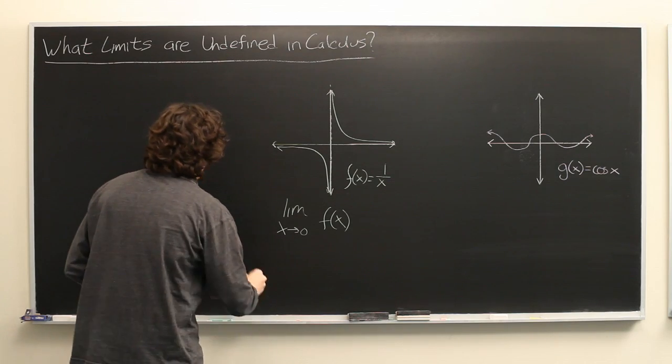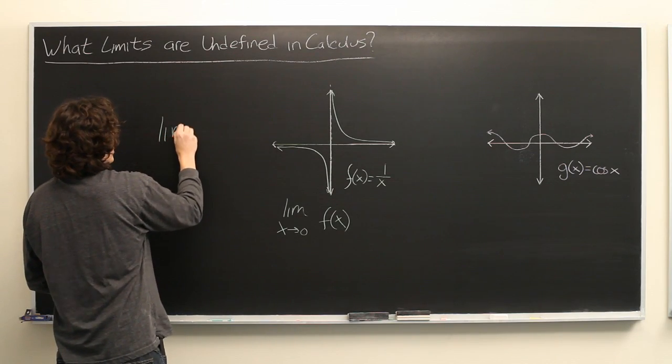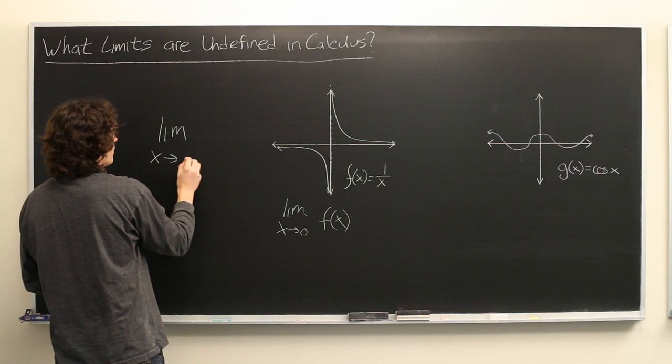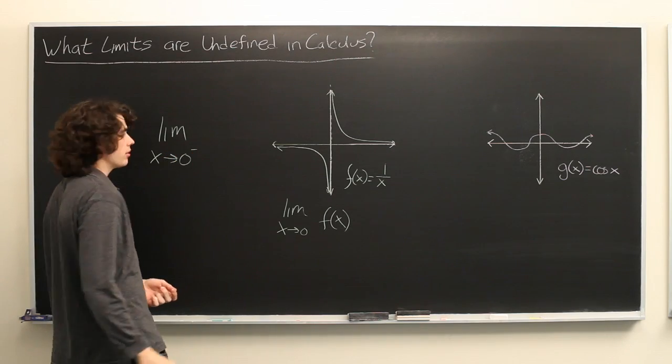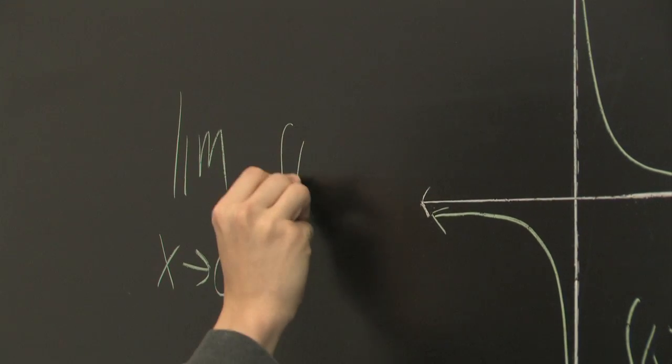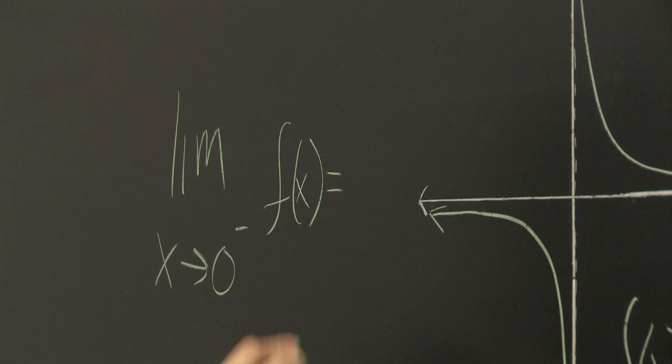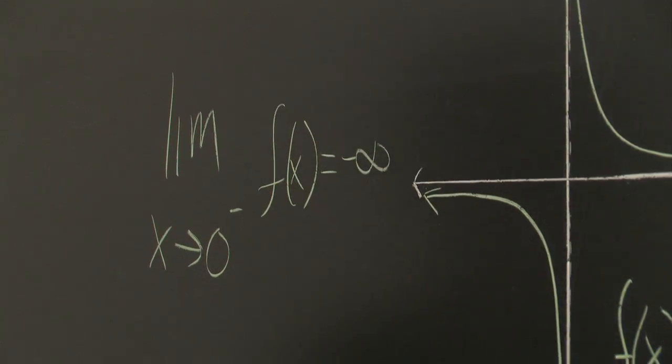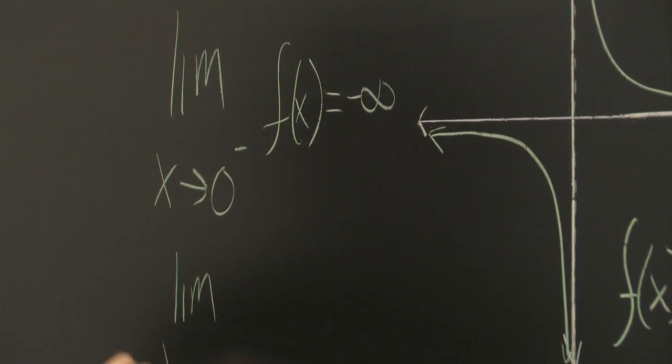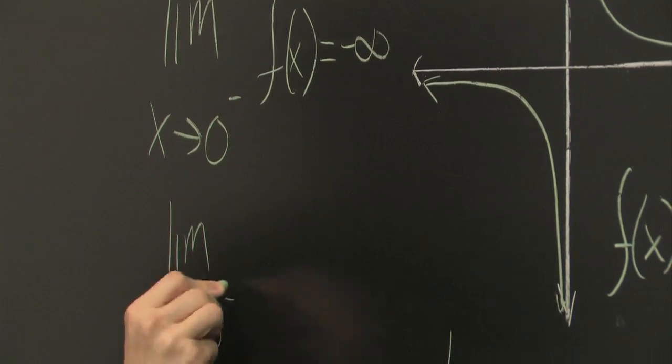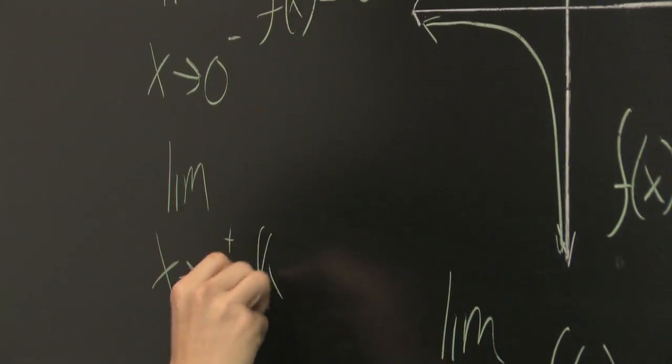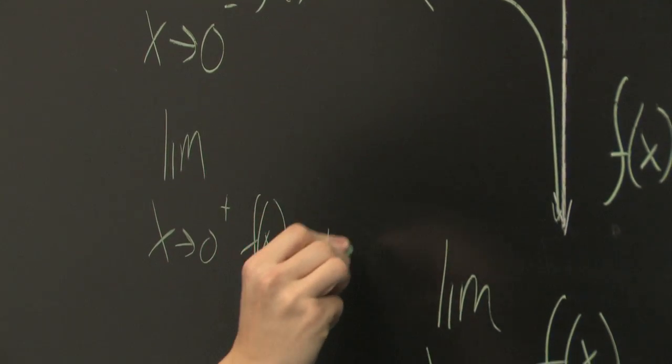For example, if you take the one-sided limit from the left, you get negative infinity. But when you take the one-sided limit from the right, you get positive infinity.